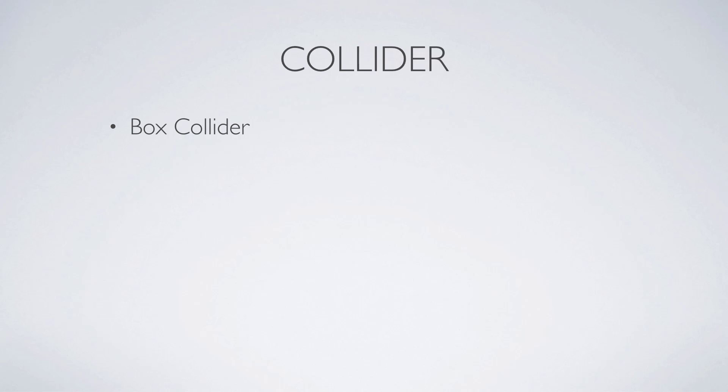For example, the box collider which makes sense for boxes or objects that have a similar shape as a box. Then the sphere collider which makes mainly sense for spheres and balls, and maybe the player object if it has a form of a sphere. The mesh collider is a very precise collider which is based on the mesh of the game object — it will be like a skin on top of the graphic itself. So if we have a spaceship that has certain edges, the mesh collider would be a great choice.